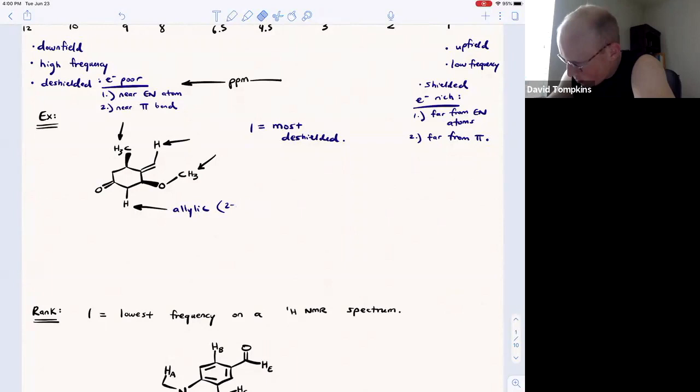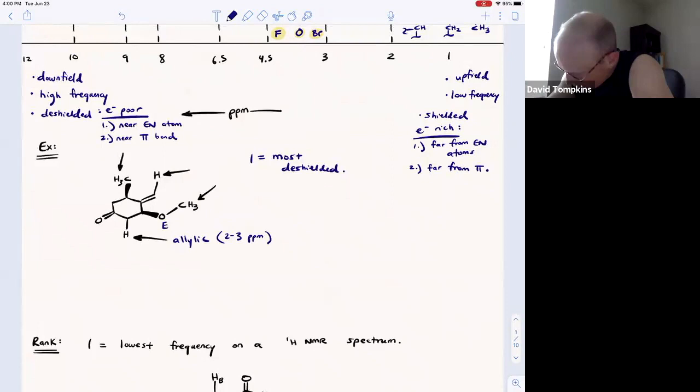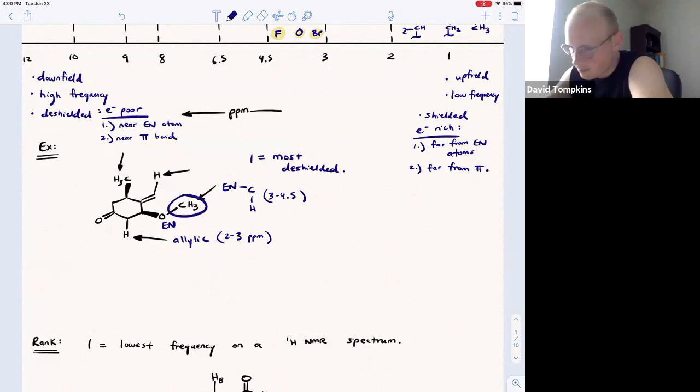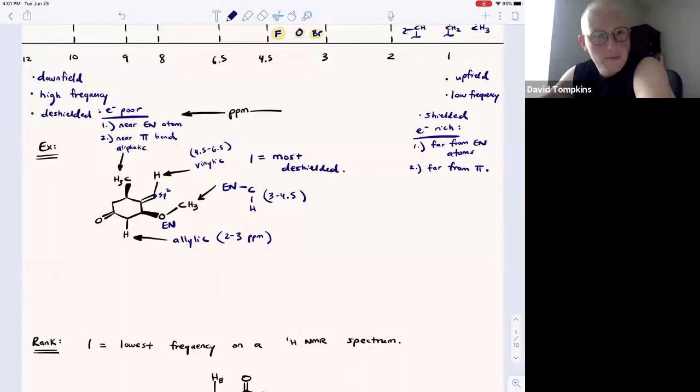What we have is an allylic proton that is one away from pi system, so that should be between 2 and 2.5 usually ppm. Perhaps it could be closer to 3 because there's another electronegative oxygen not too far away. Here we have our electronegative heteroatom oxygen adjacent to that. This is an electronegative region, which I showed above was between 3 and 4.5. Usually it's about 4 for a methoxy group like this. This carbon is sp2, and so the proton on the sp2 carbon is vinylic. Usually those show up between 4.5 and 6.5. Finally, this methyl here is only bound to other sp3 carbons, so it's aliphatic and the chemical shift would probably be around 1.